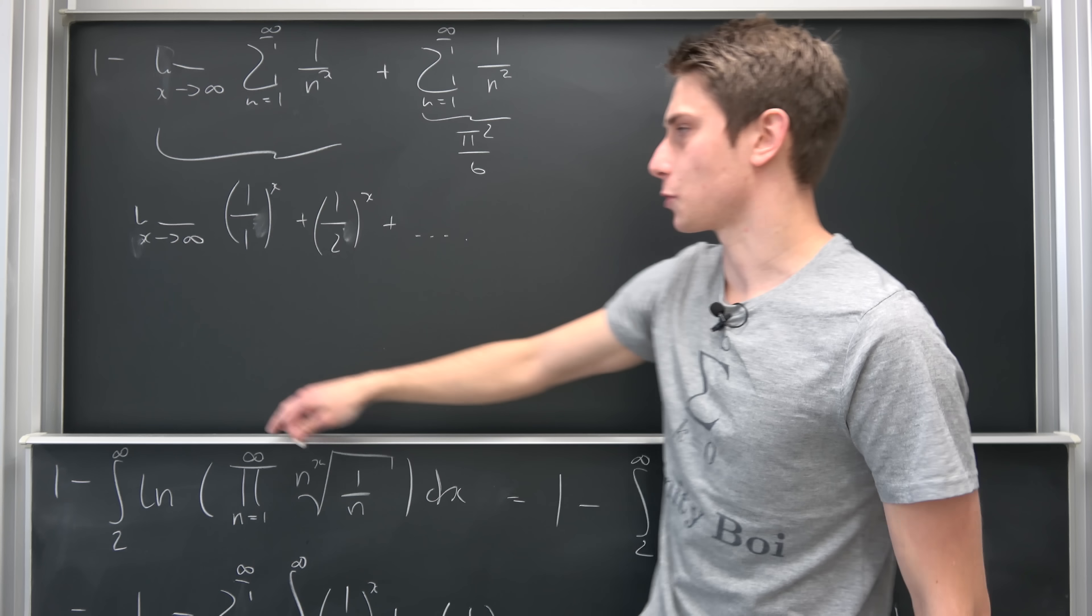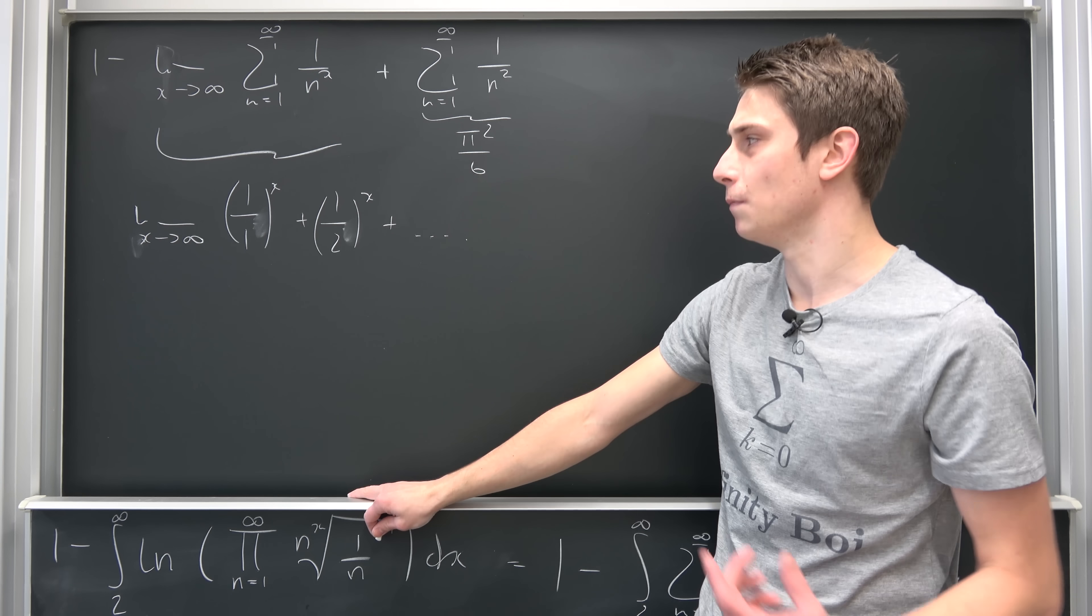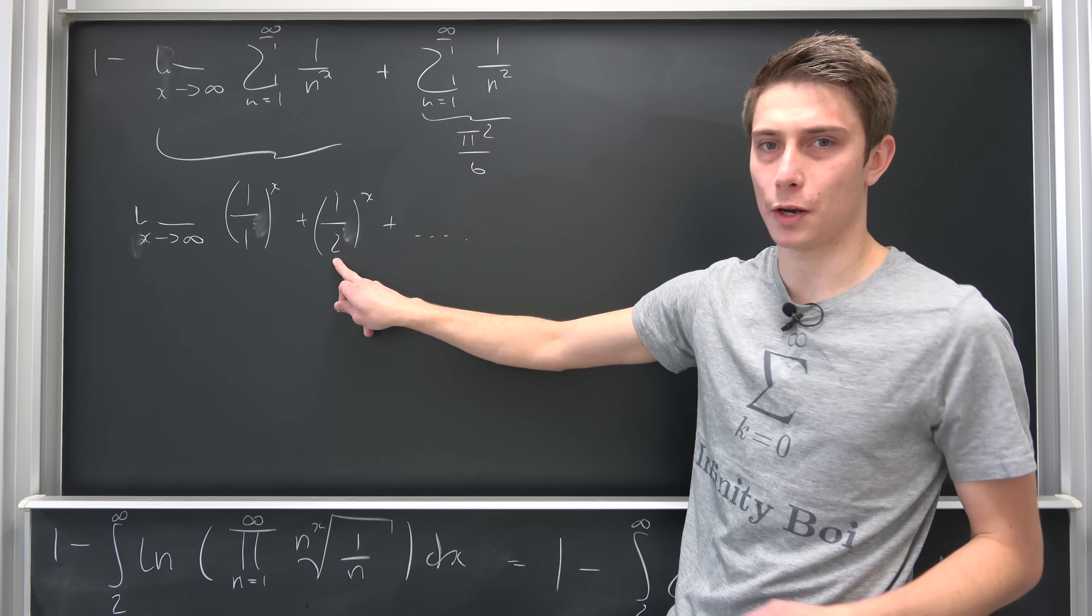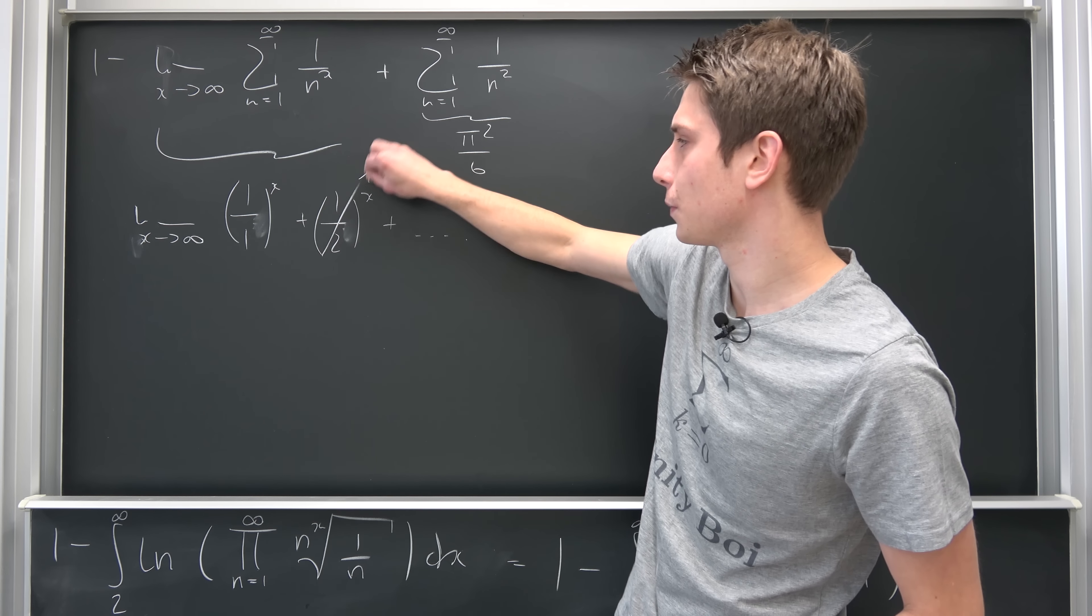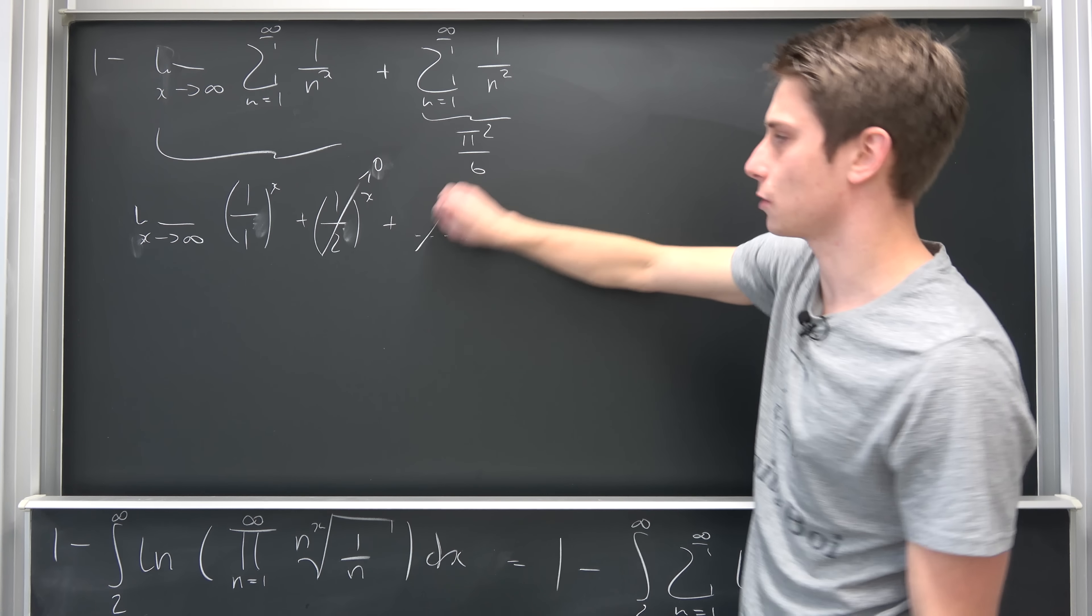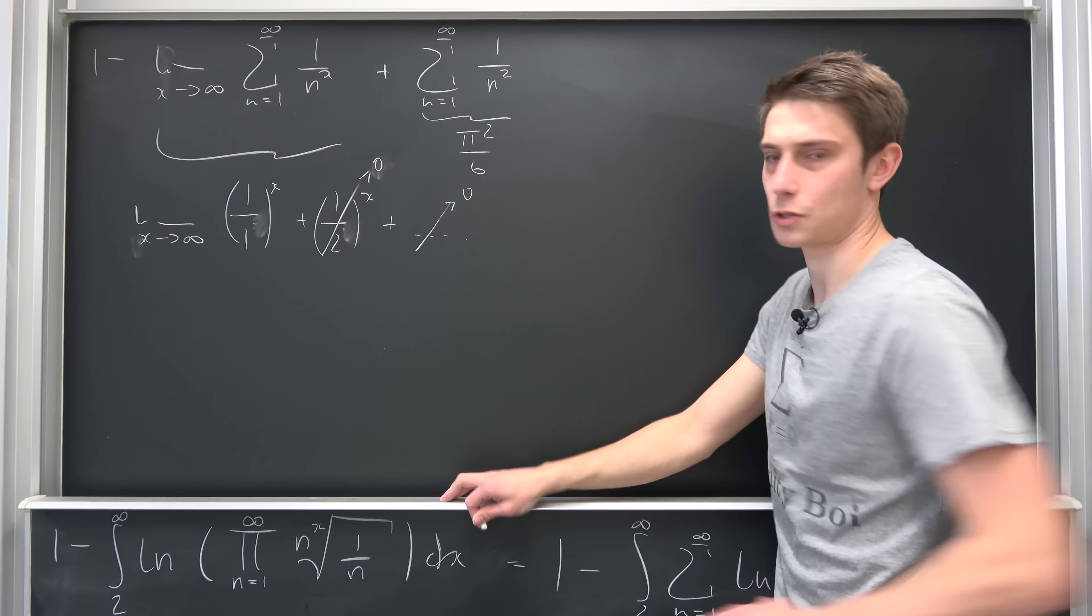Okay, what are we going to get? So limit as x approaches infinity of 1 over 2 to the x power. Okay, if x approaches infinity, this is going to be 1 over infinity, it's going to 0. This is 0. Then our next part, this is going to 0. Okay, and our next part, our next part, etc.